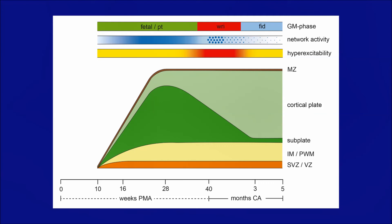Second, developmental changes in the cortical networks turn activity in these networks less intensive and occurring in smaller groups of neurons — this is called sparsification of activity, indicated by the line with the increasingly smaller dots. When the hyperexcitability vanishes, the sparsification breaks through and the fidgety movements emerge. The absence of fidgety movements implies an interference with this developmental process.